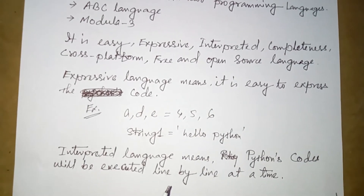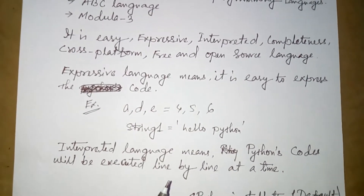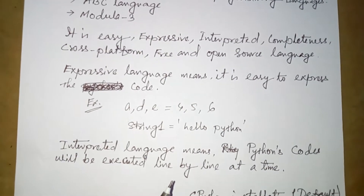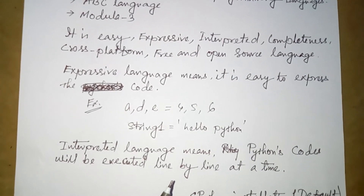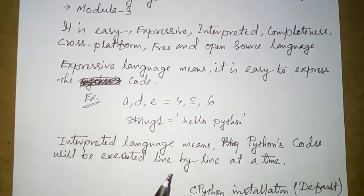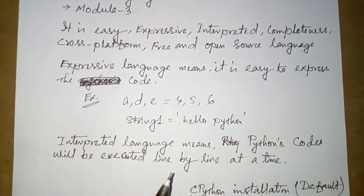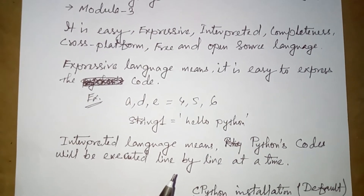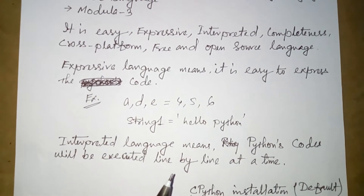We can download the source code from the same website, so we can use Python for free as open-source software. A disadvantage is that when you use an interpreted language, it translates code line by line, which means it will be very slow to run compared to compiled languages.